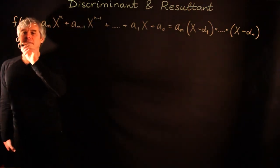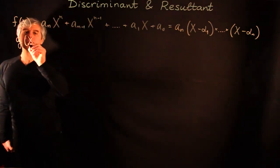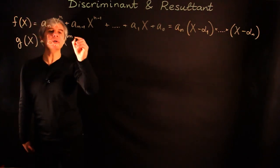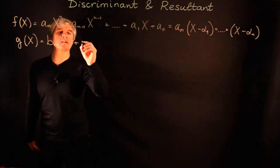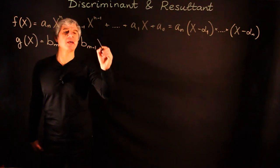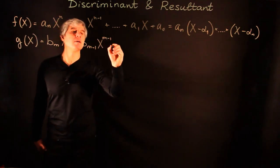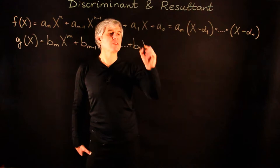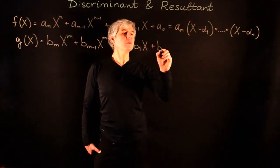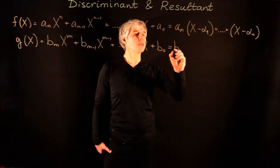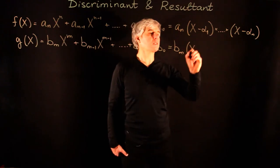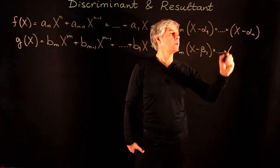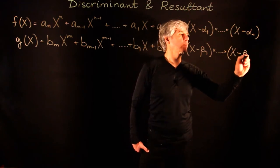And g(x) is b_m x^m + b_{m-1} x^{m-1} + ... + b_1 x + b_0, which equals b_m times (x - β_1)···(x - β_m).